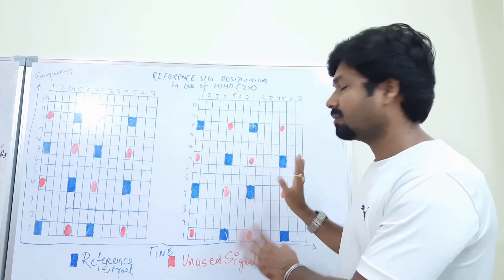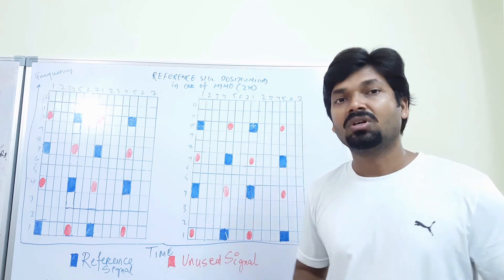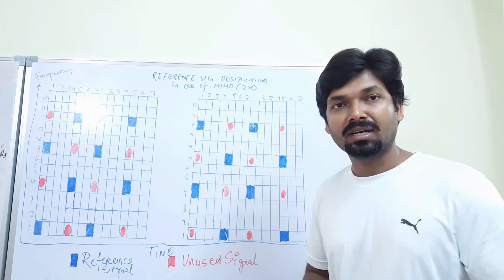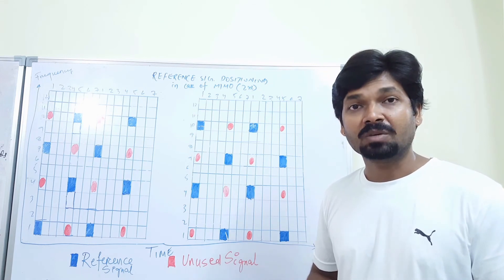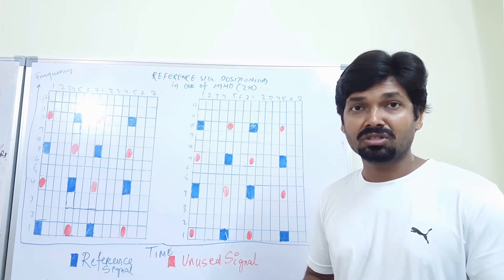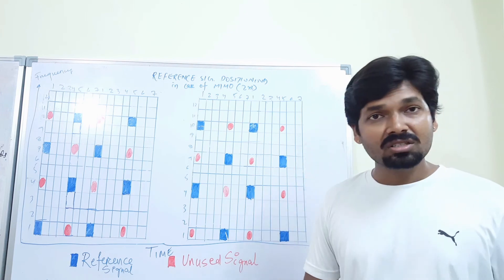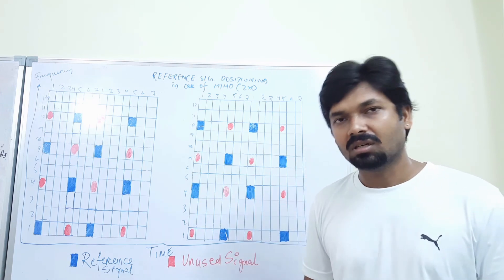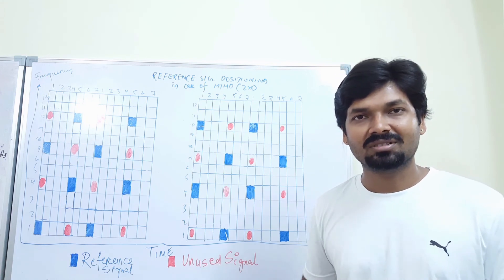That's all about the reference signal positions in case of MIMO transmission in LTE. Hope you really understood. We'll be coming up with PBCH positioning in the next session or chapter. Thanks so much for watching — do like and share our other videos, keep in touch for more interesting LTE videos, and we'll be coming very soon with a new one. Thank you so much, take good care of yourself, bye bye.